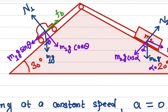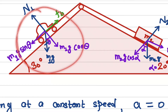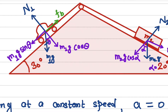As we are applying the brake onto the car, the braking force acts opposite to the motion, along the inclined surface. So we draw all these forces in the free body diagram.